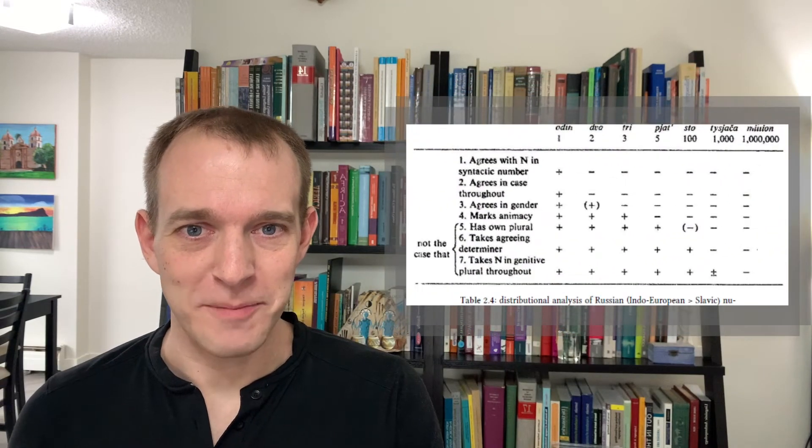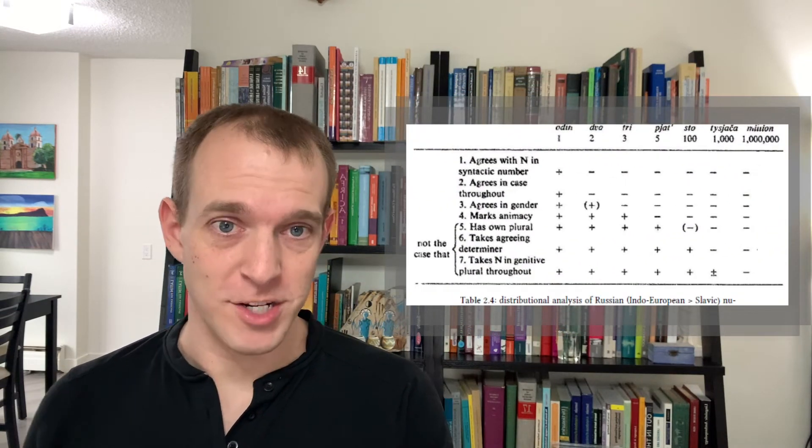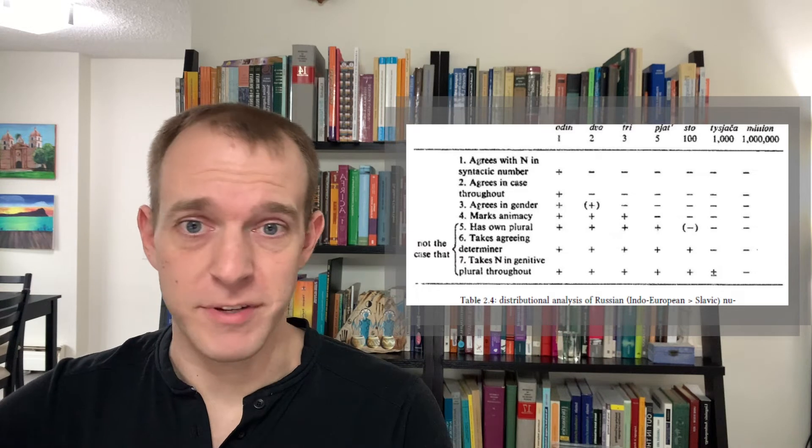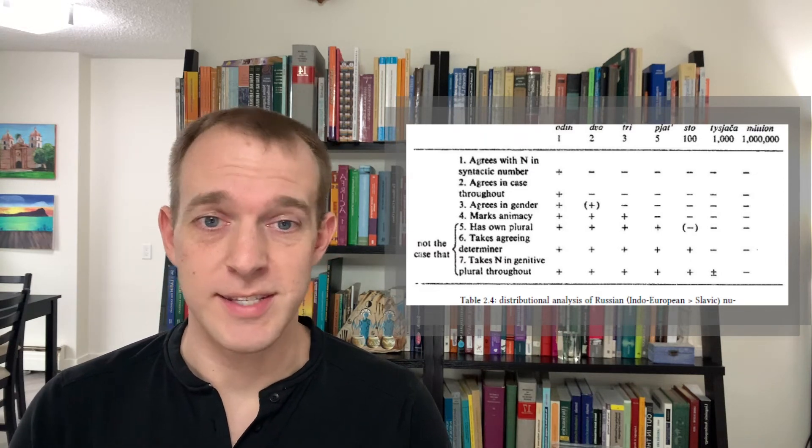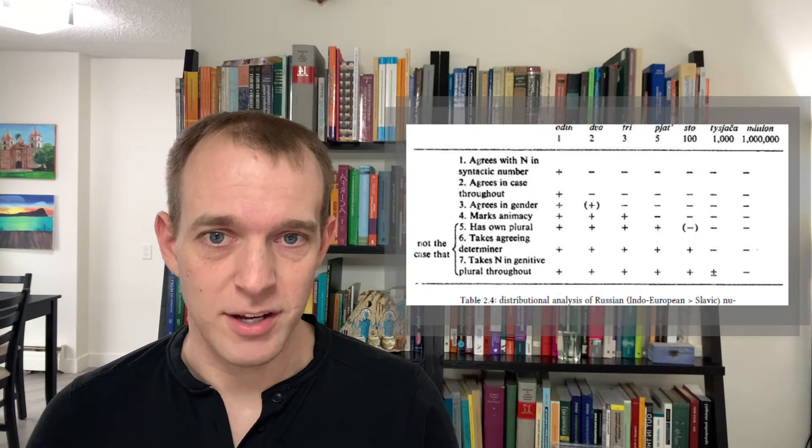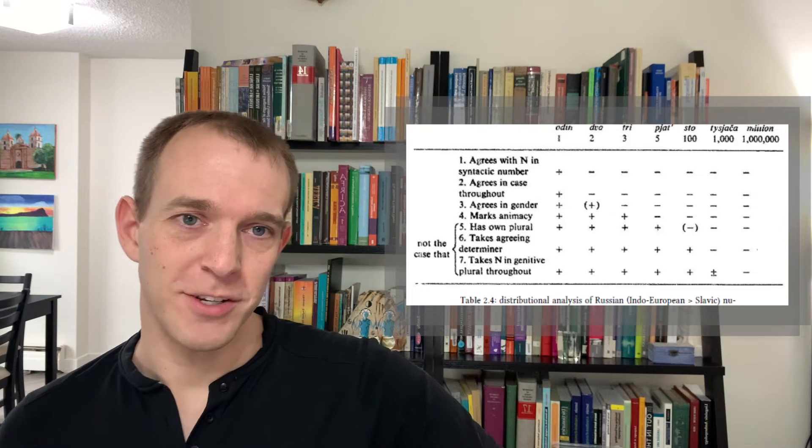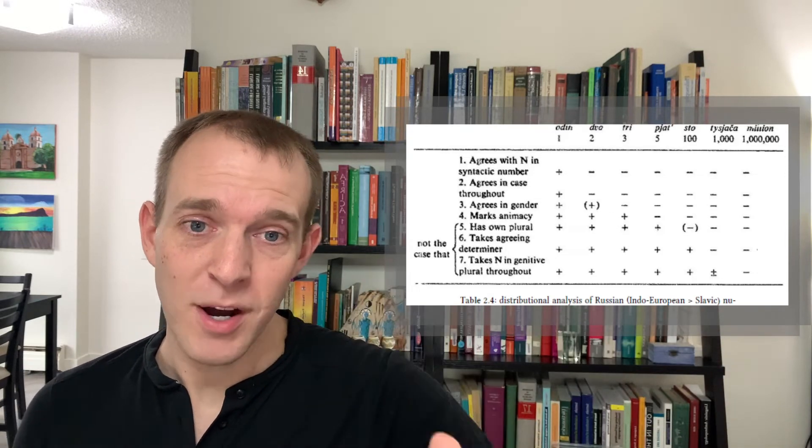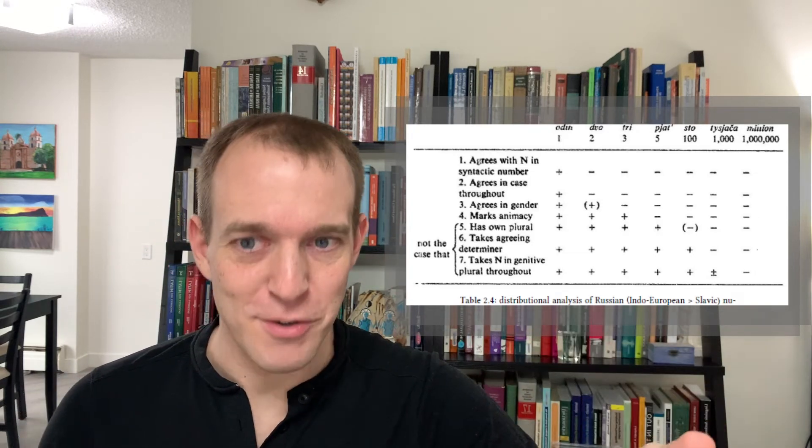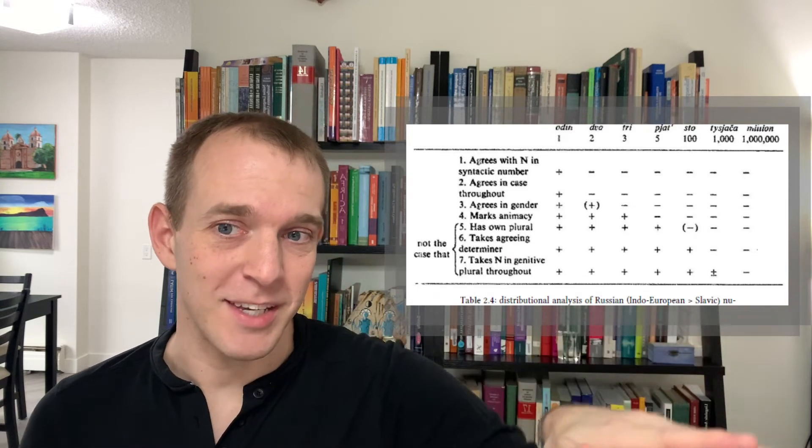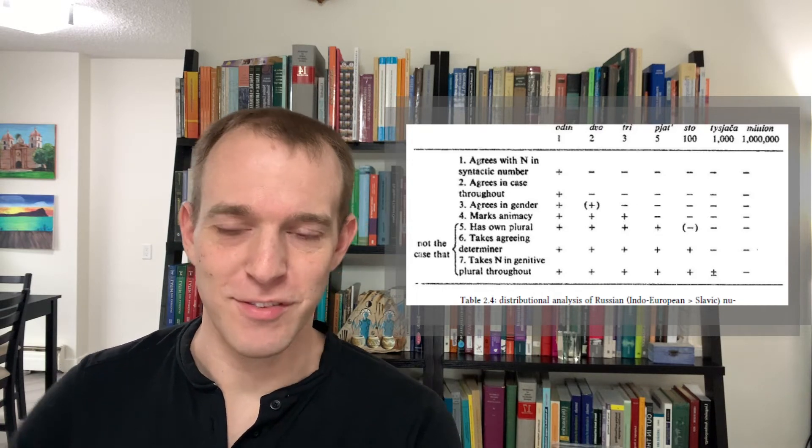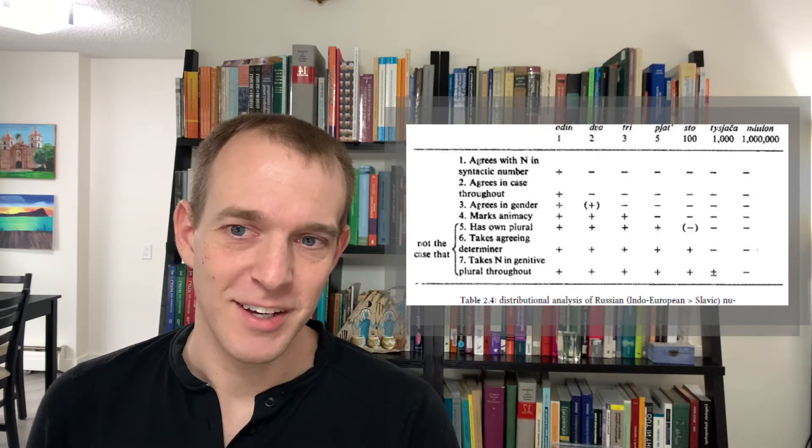It gets a little more complicated. So this is some data from Russian. And these are numbers in Russian. And on the left, you can see a number of different grammatical features. So does the number word agree with the noun in syntactic number? Does the number word agree in case throughout the clause? Does it agree in gender? And so you can go through and you can look at each of these numbers. And the number one does all of these features. But the number two only does some of those features. And the number three does fewer of those features and five and so on up until you have the word a million.